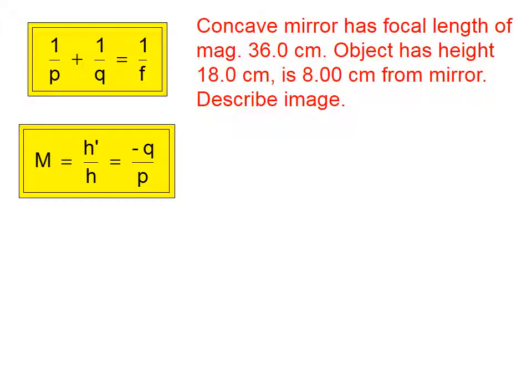Let's do another example. Here we have a concave mirror with a focal length of magnitude 36 centimeters. Now because we have a concave mirror, by convention, focal lengths are positive, so that's going to be positive 36 centimeters. The object height is 18 centimeters, that's the variable h, and we're told that the object is 8 centimeters from the mirror. That's telling us the object distance p equals 8.